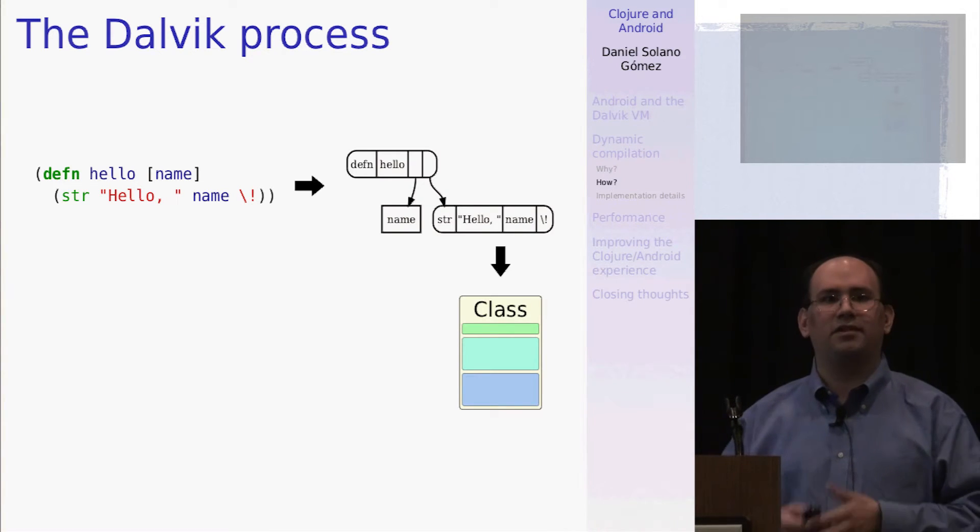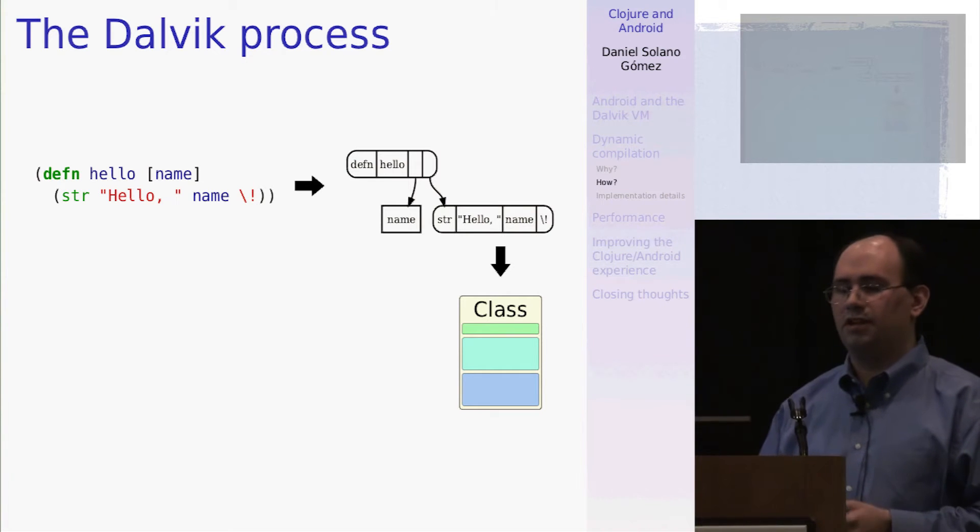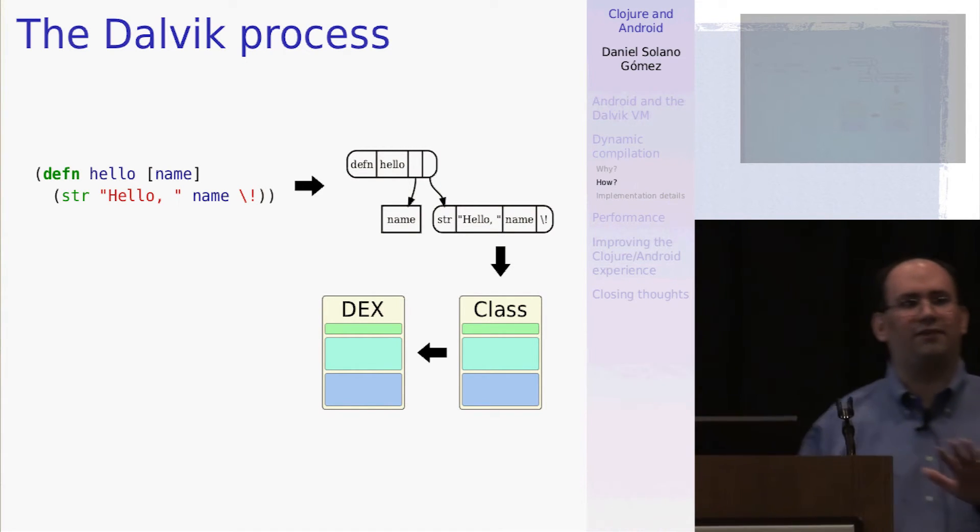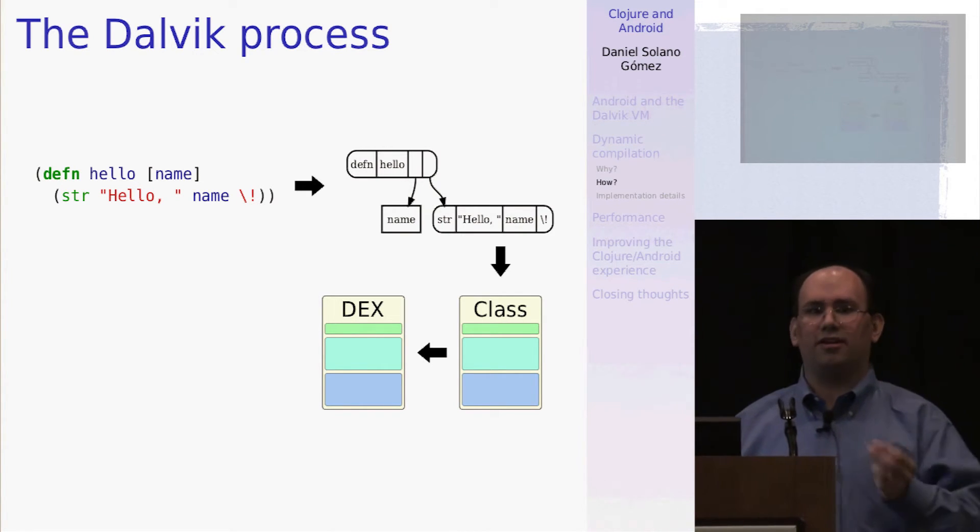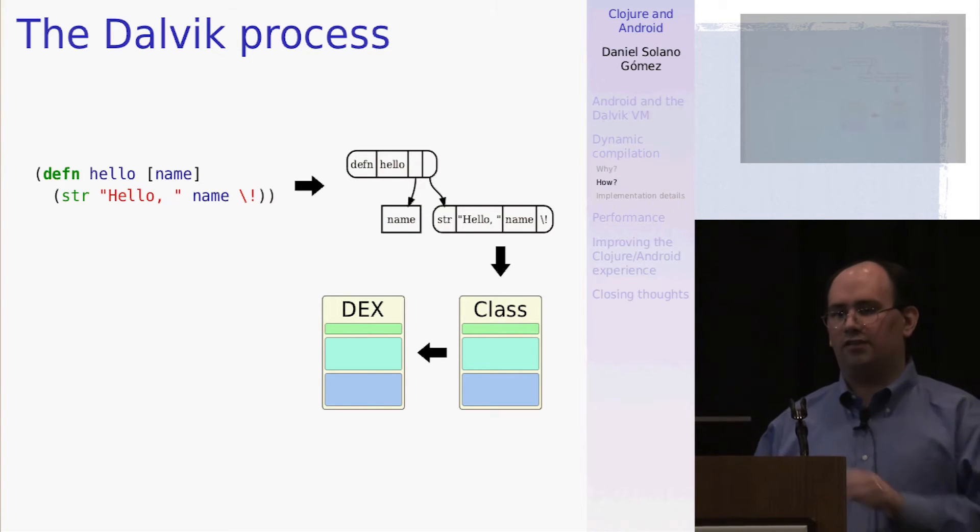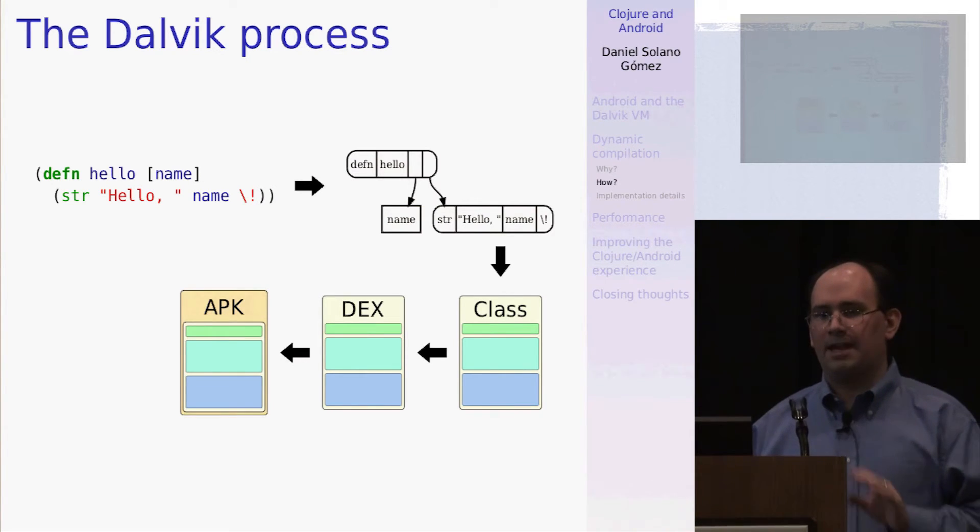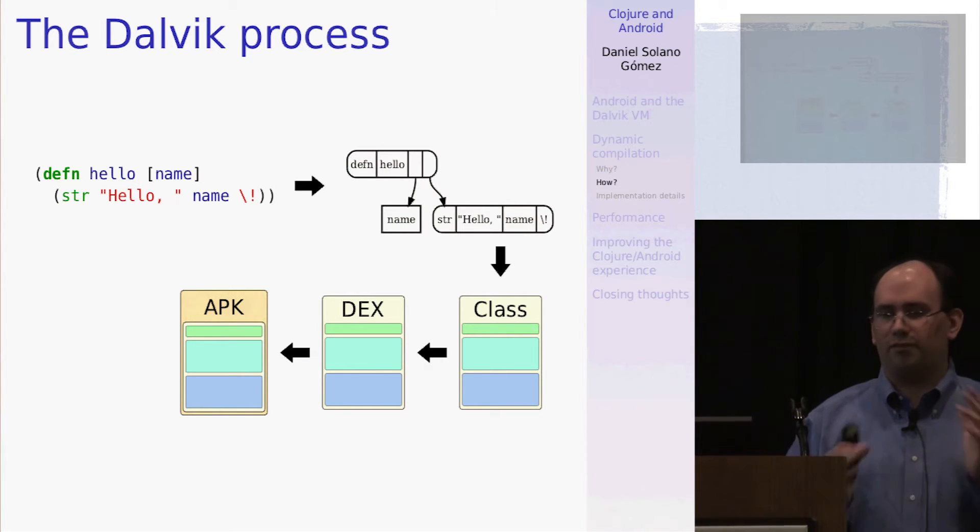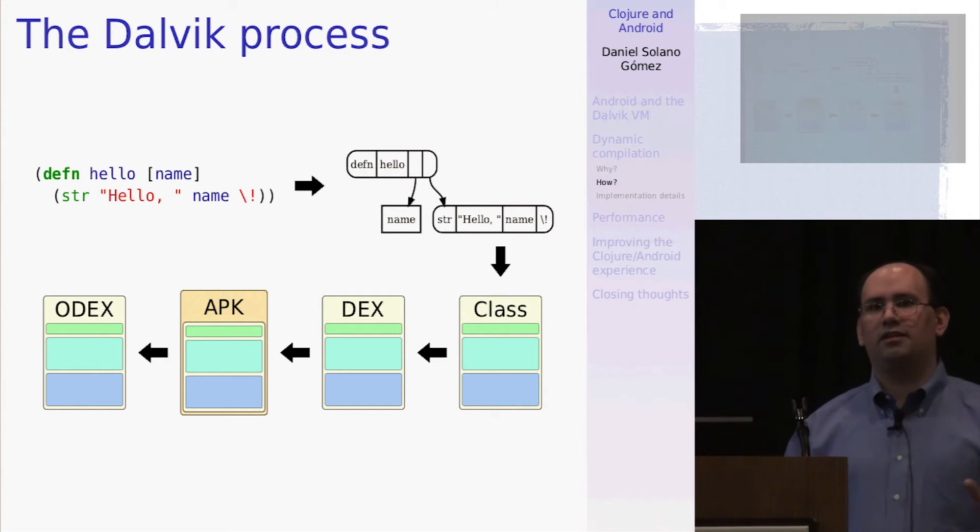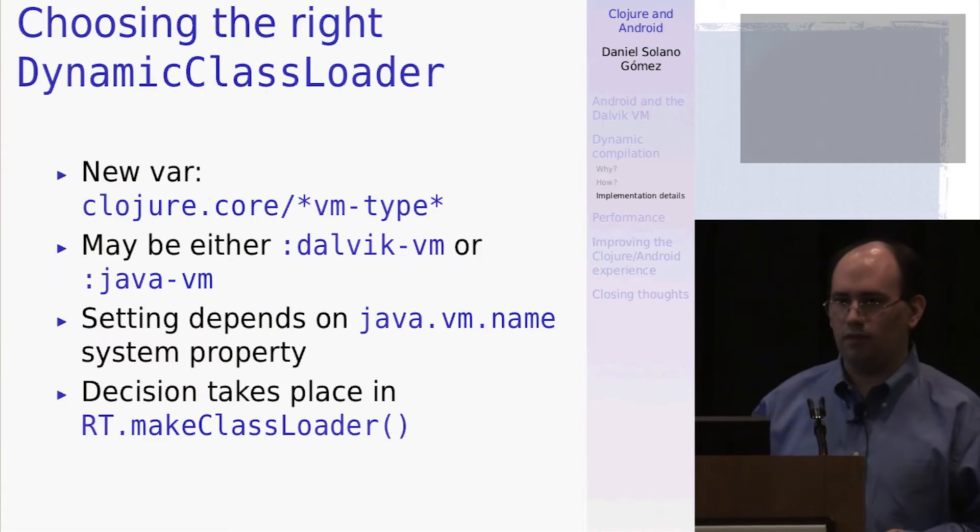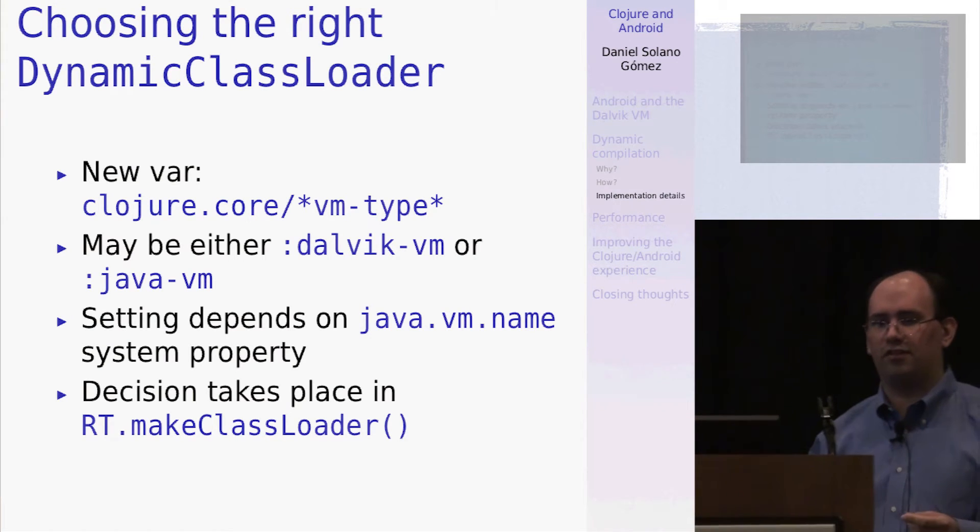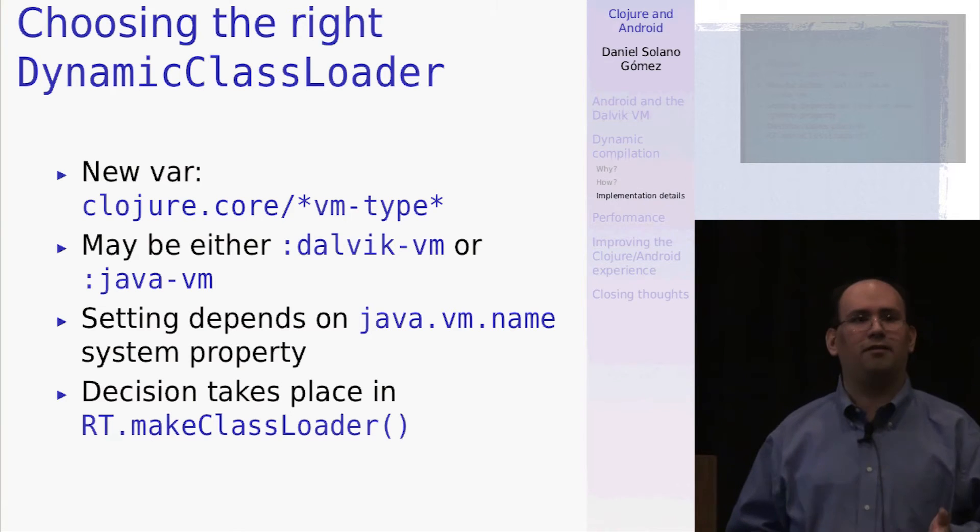So what is this extra work? We have the first few steps that come from Clojure itself. This next step, taking that class file and creating a DEX file out of it, I do by using some of the code that comes from the Android SDK. And so this process takes place in memory. I then package that DEX file into a small APK that it's saved onto the file system. And at that point, I can use the Android SDK to load up that DEX file and make it available for use.